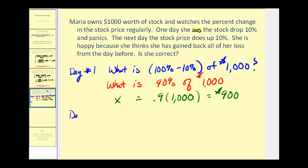Now for day two, we want to know what is 100 percent plus 10 percent of, and on the second day it's not $1,000 anymore, it's $900. She goes into day two at $900, and that amount will increase by 10 percent.